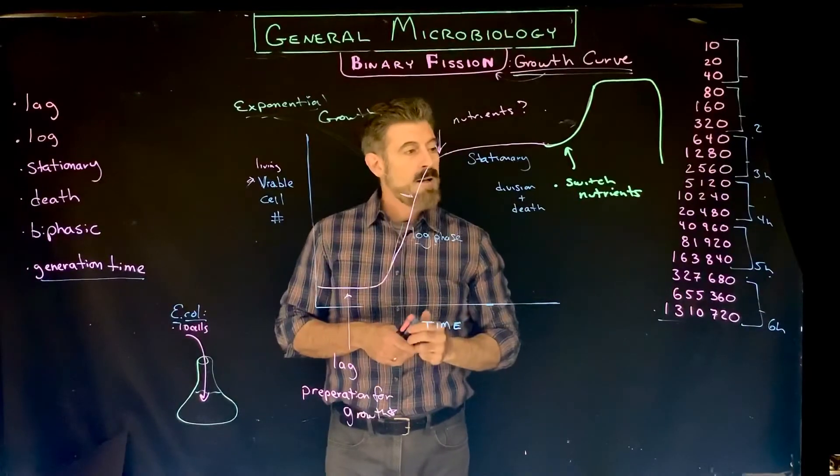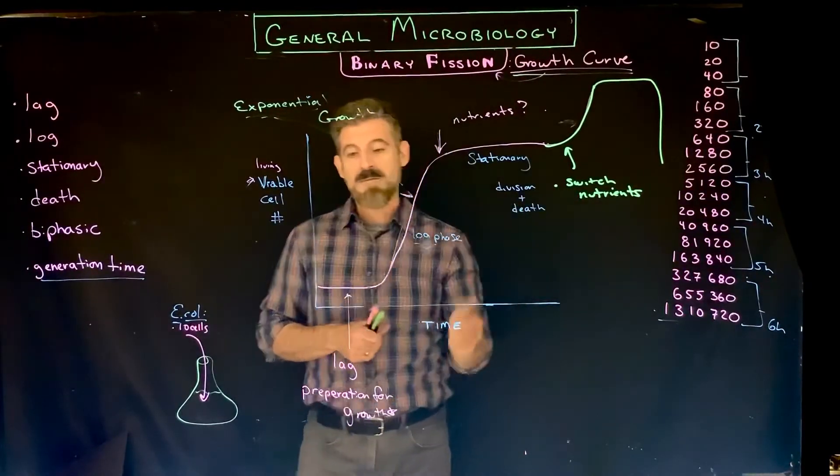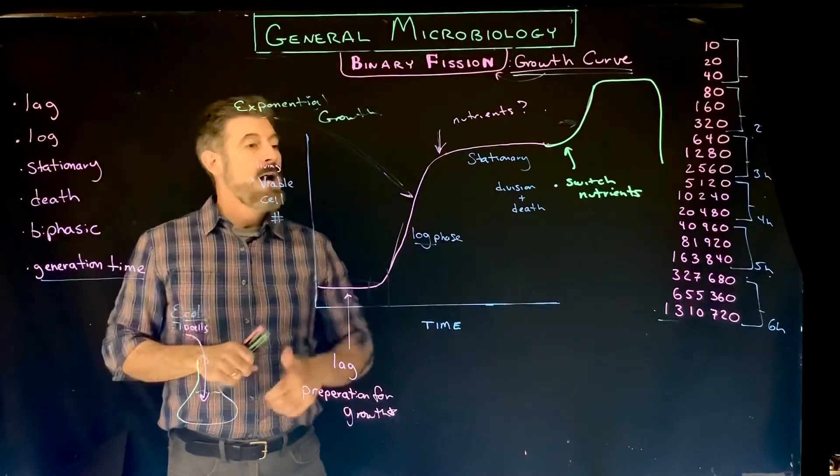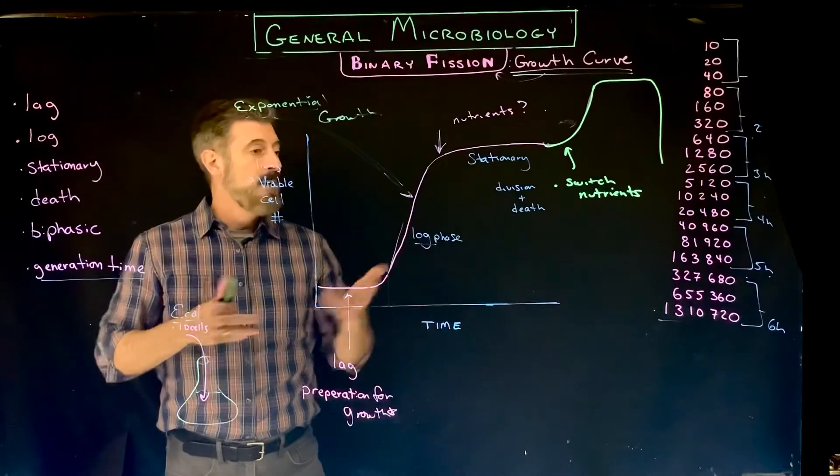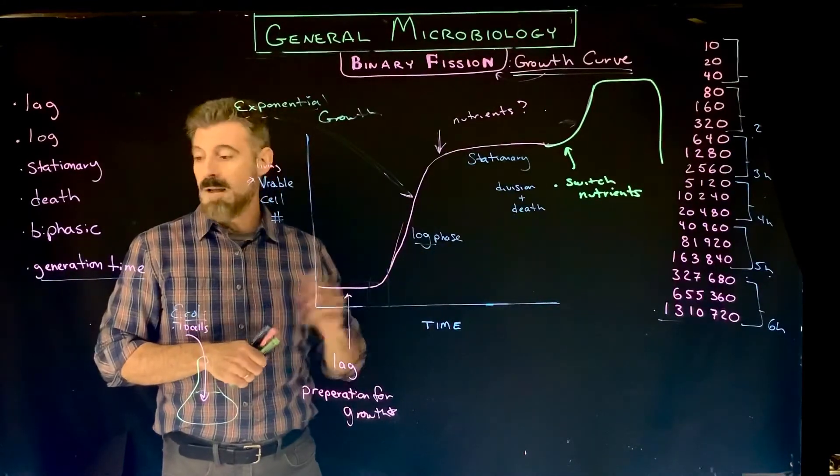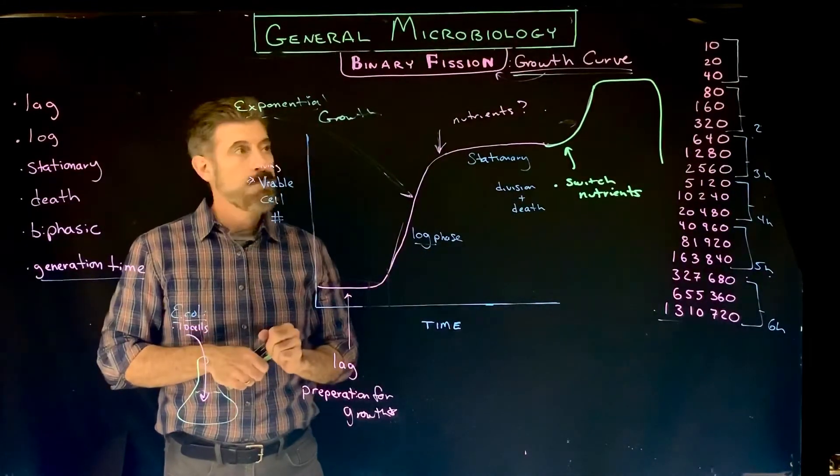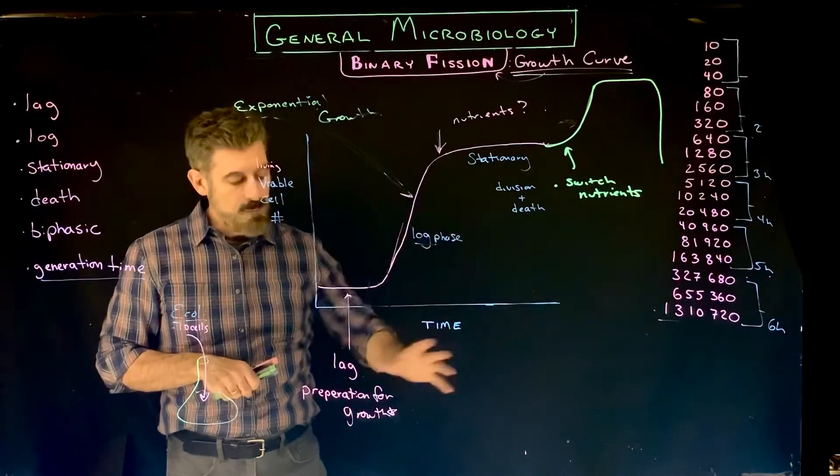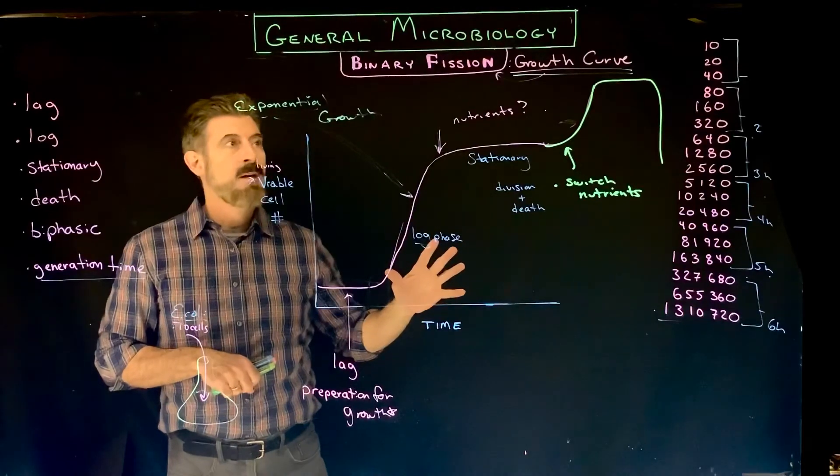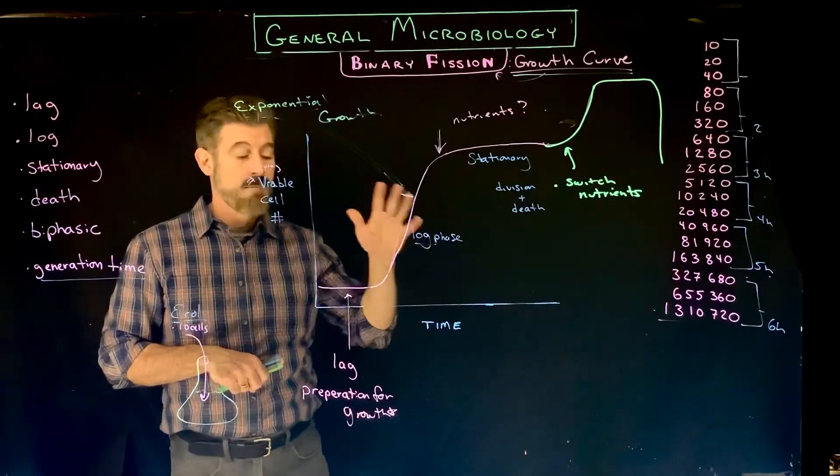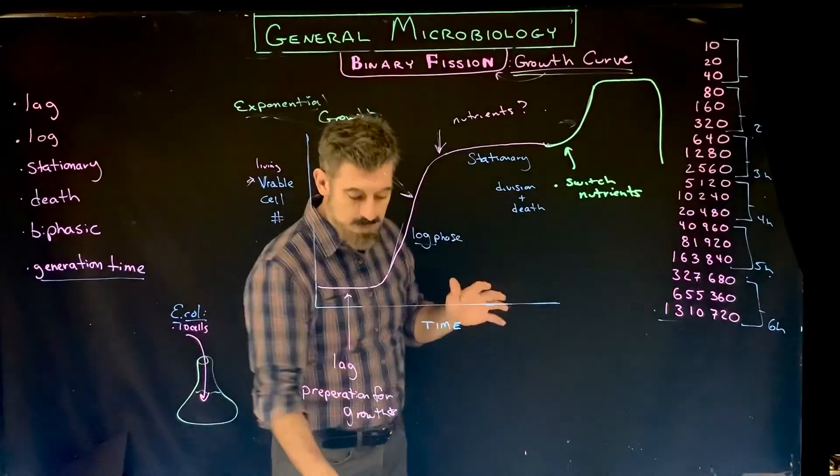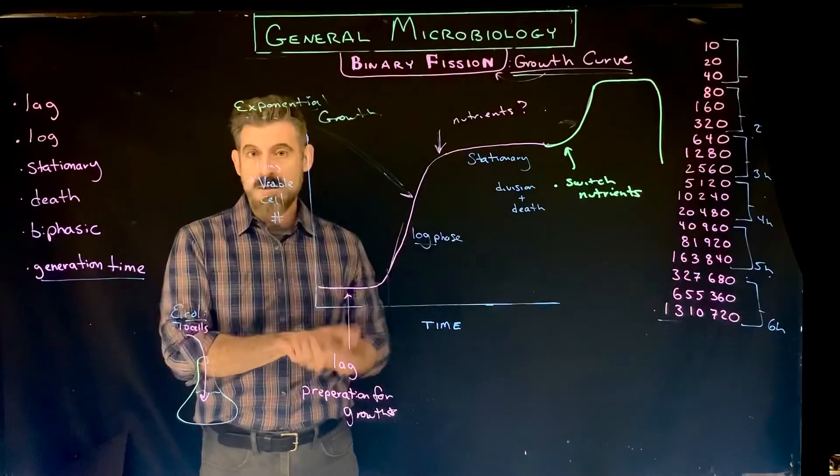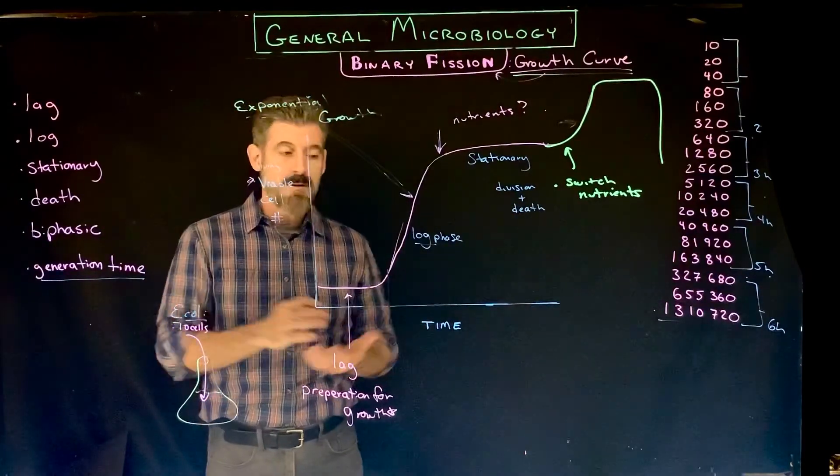The main thing from this is just know definitions of lag, log, stationary, and death phases and be able to label them if you were given just a blank graph. Put them on the chart and explain what's going on during each phase. That's pretty much it. That's going to wrap up the major topics and terminology related to bacterial cell division or binary fission. Next we're going to start to look at regulation of growth and division.